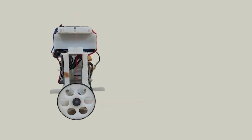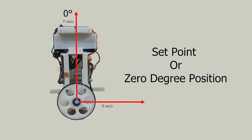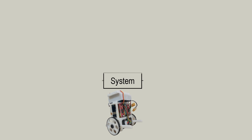In a self-balancing robot, we want the robot to stand on two wheels vertically upright. Let's call this vertically upright position the set point or zero degree position. This is what we call the system that we want to control. The input into this system is the motor speed and direction.